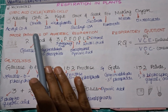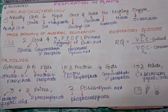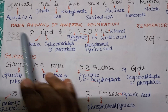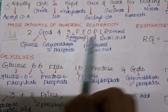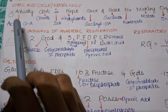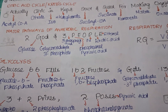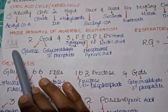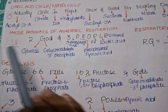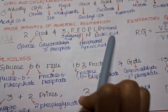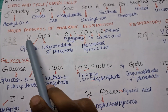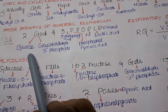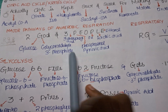The next trick is for the major pathways of anaerobic respiration. You can see the picture — there are three people drawn. If you draw something like this in your notebook it will be easier to recall during an exam. The trick uses 'two god and three people.' The reason for 'two god' is that there are two G's. The first G stands for Glucose and the next G stands for Glyceraldehyde-3-phosphate.